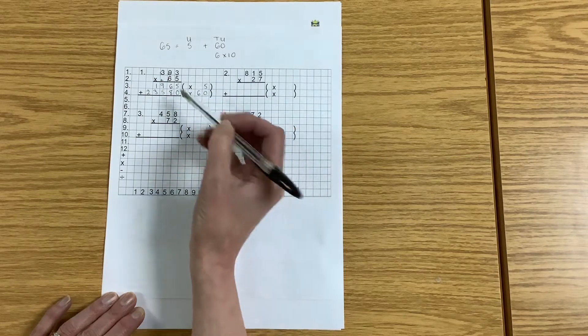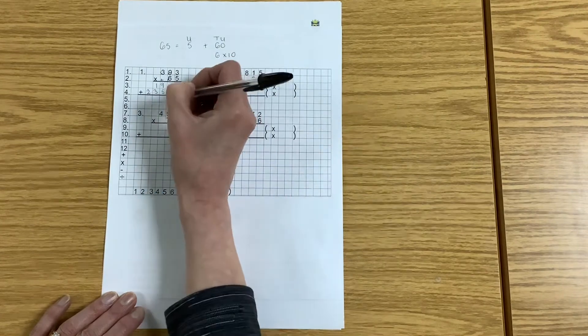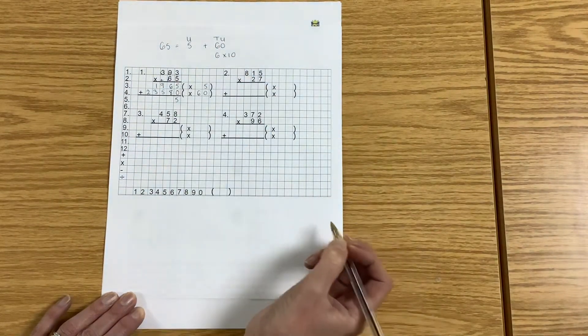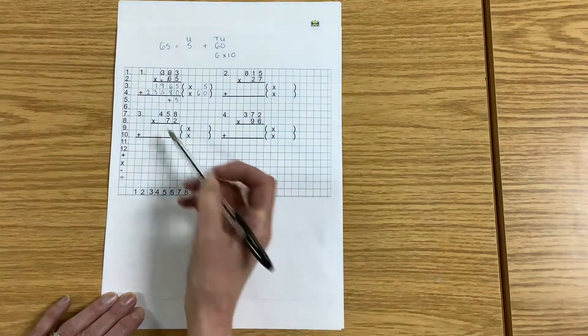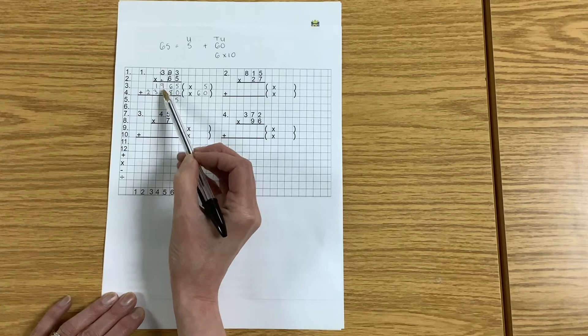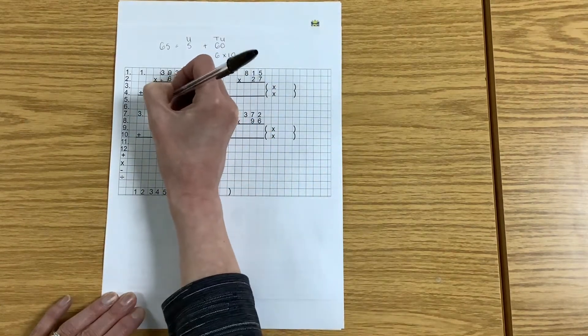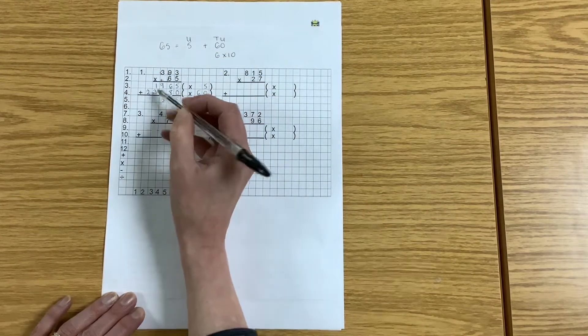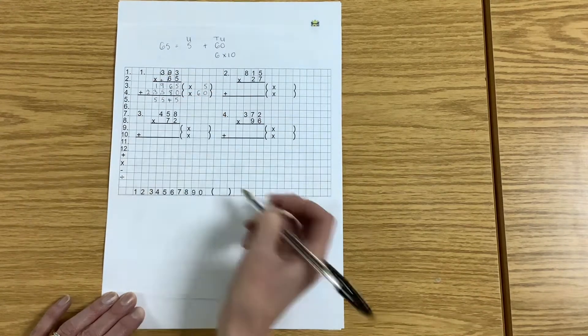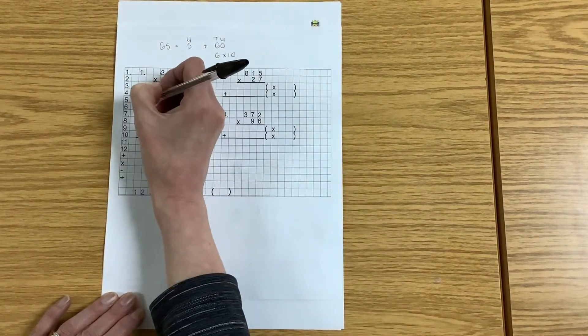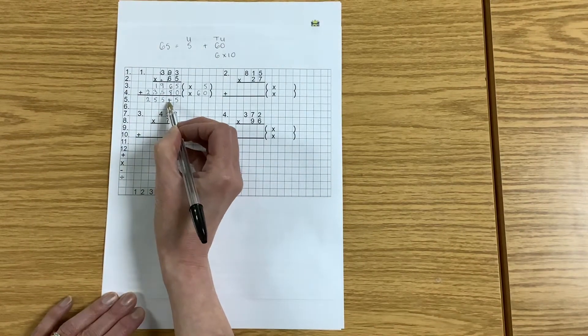Now what I need to do is add my two answers together. So 5 add 0 is 5. 6 add 8, 14. Don't forget to carry the carried number over and put it at the bottom. 9 plus 5 plus 1—well, 9 add 1 is 10, add 5 more is 15. 1 plus 3 plus 1 is 5. 2 add nothing. What does that answer say? 25,545.